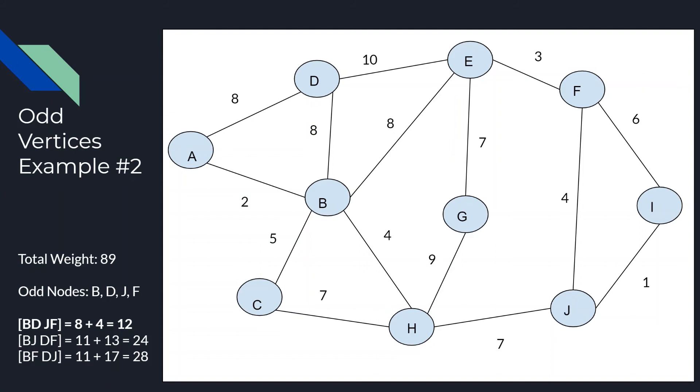Lastly, node B can be paired with node F. And that would give us a total of 11. And if that is the case, then node D would be paired with node J. Finding the shortest path would give us 17. And summing 11 plus 17 would be 28.